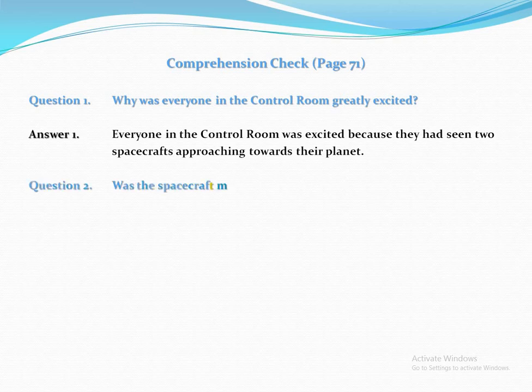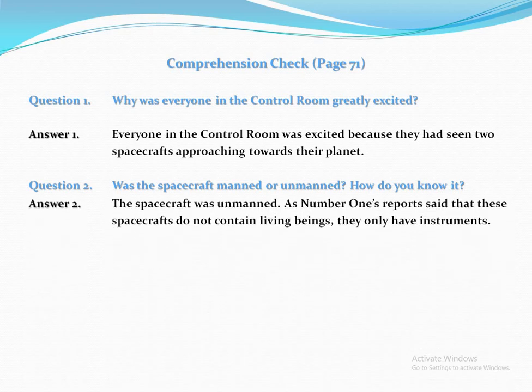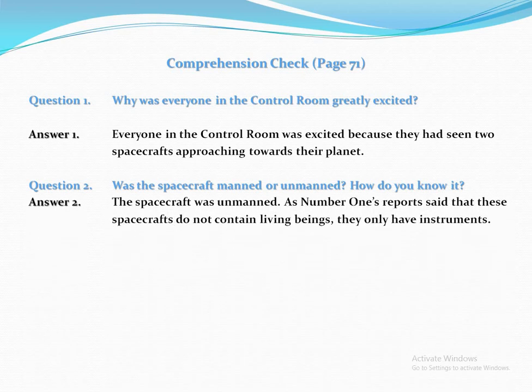Question number 2: Was the spacecraft manned or unmanned? How do you know it? The answer is: The spacecraft was unmanned. As number 1's report said, these spacecrafts do not contain living beings — they only have instruments.